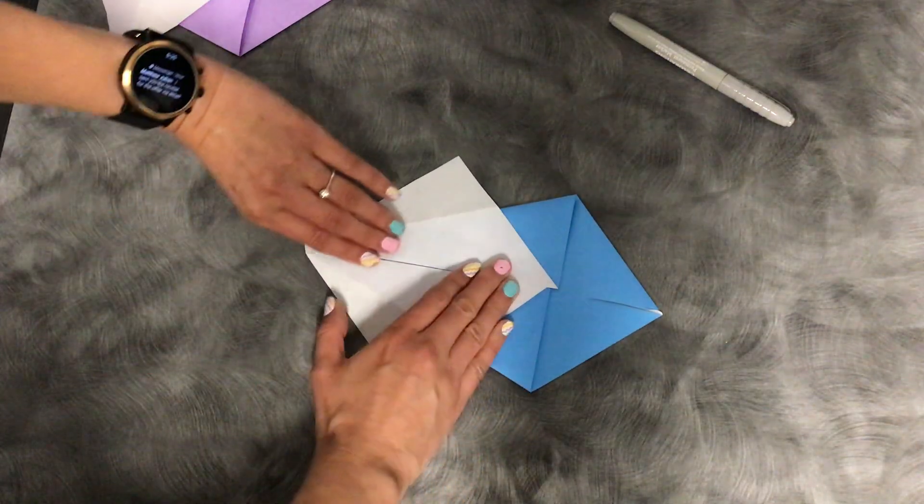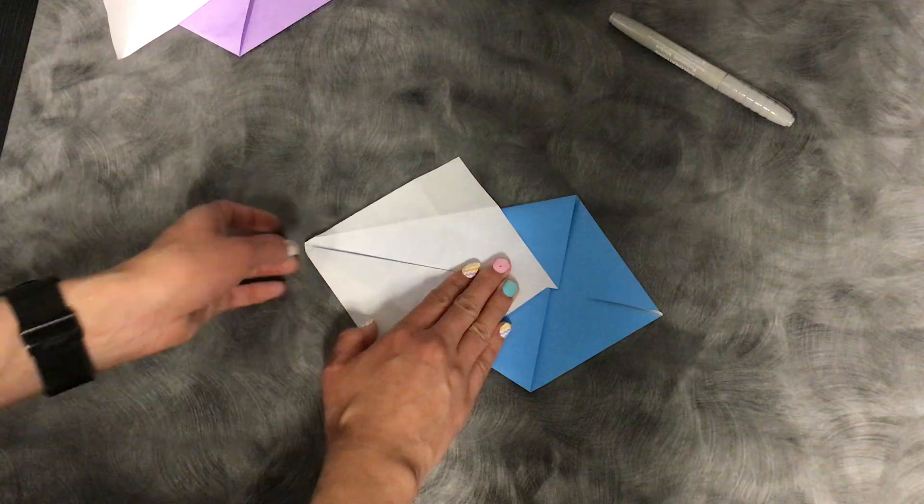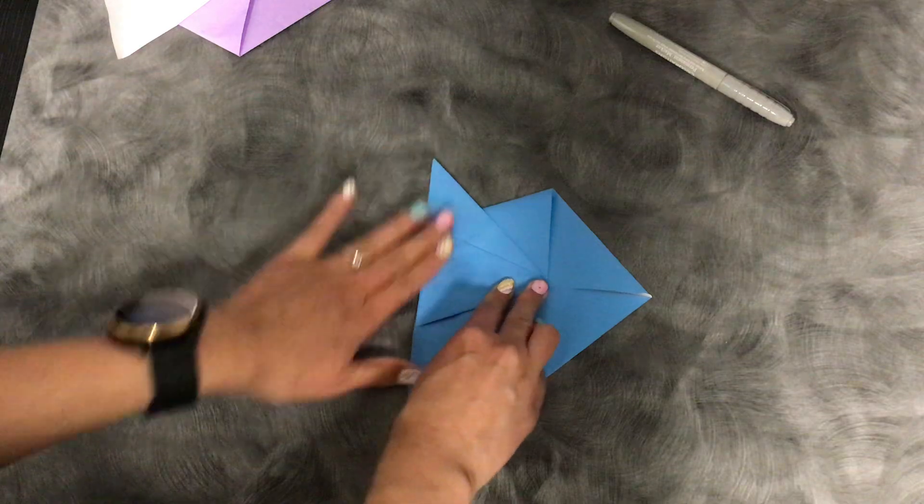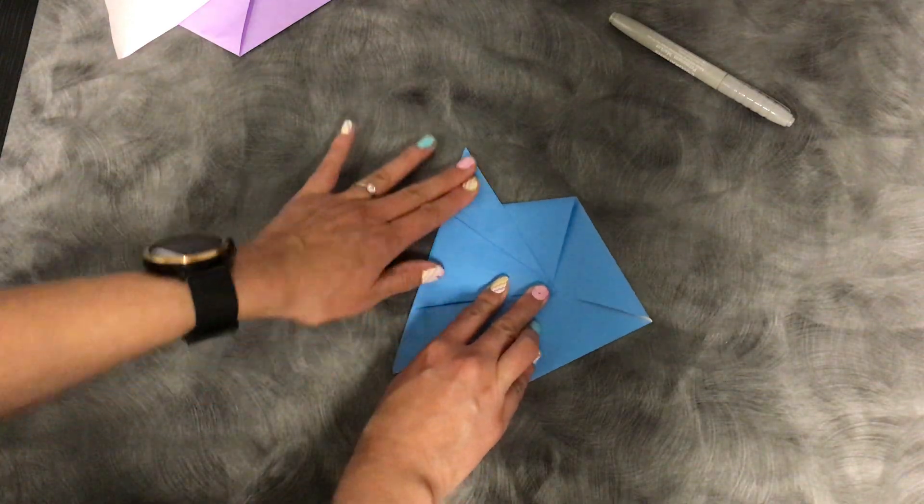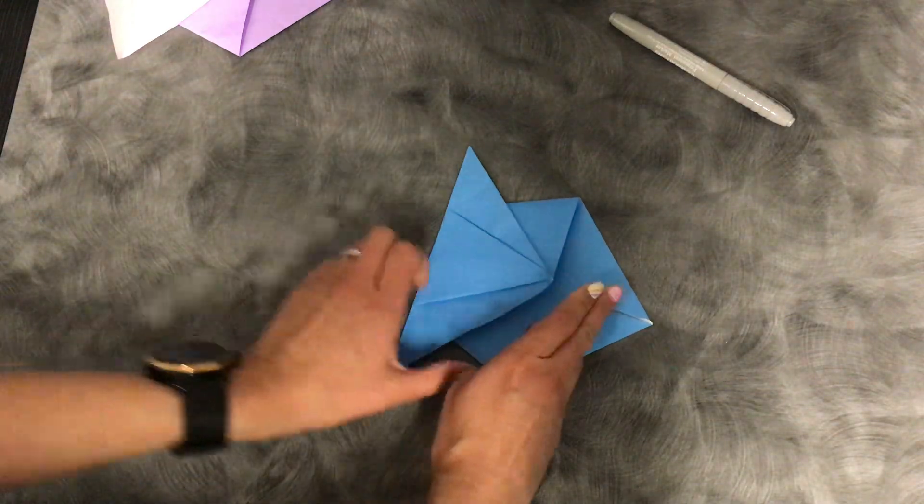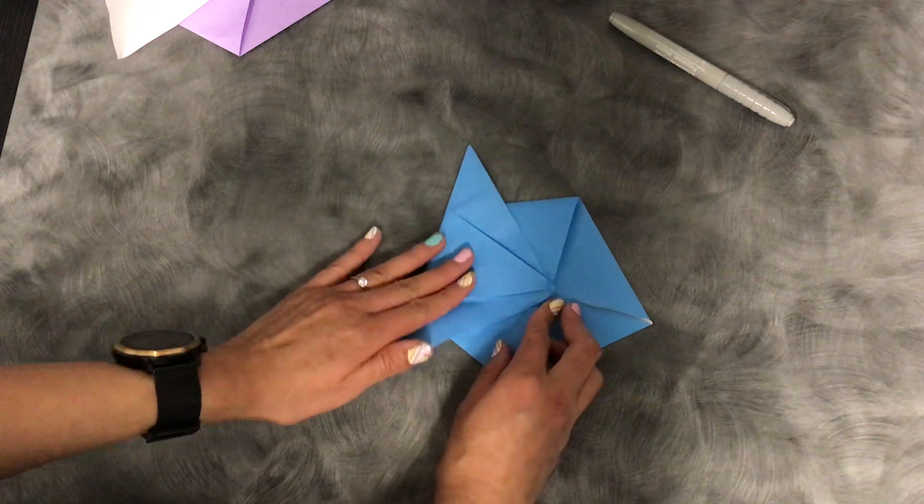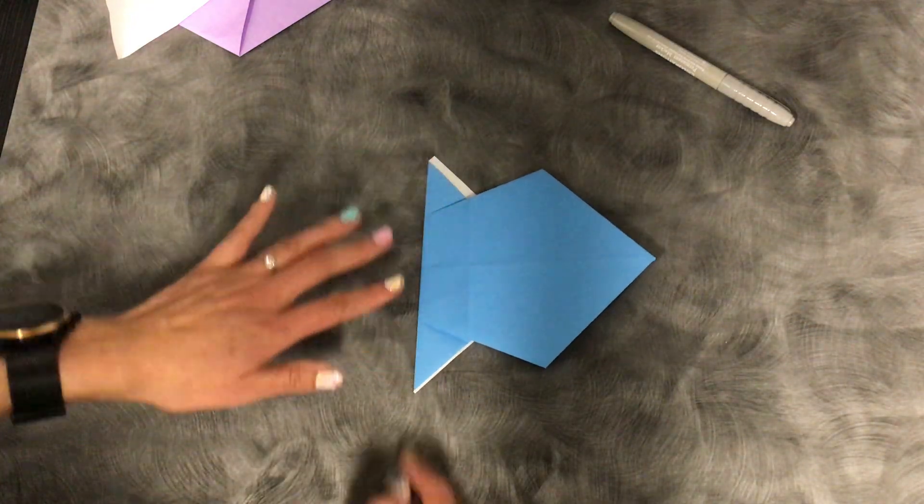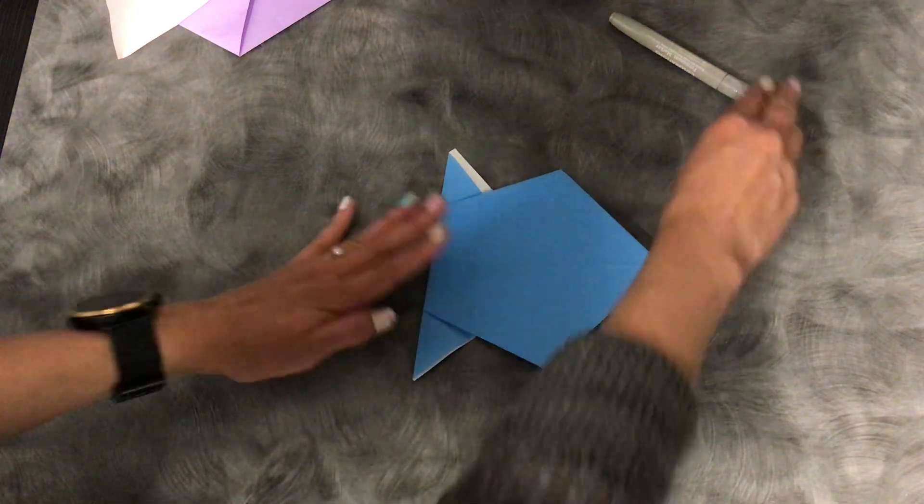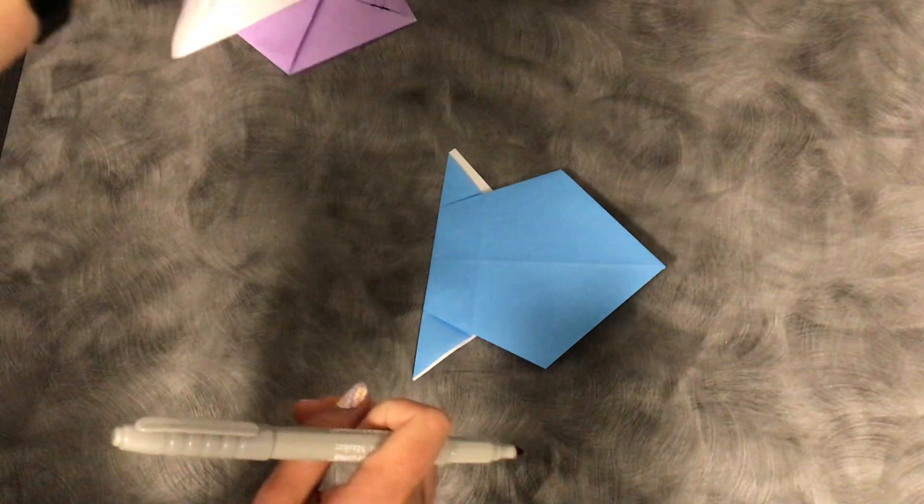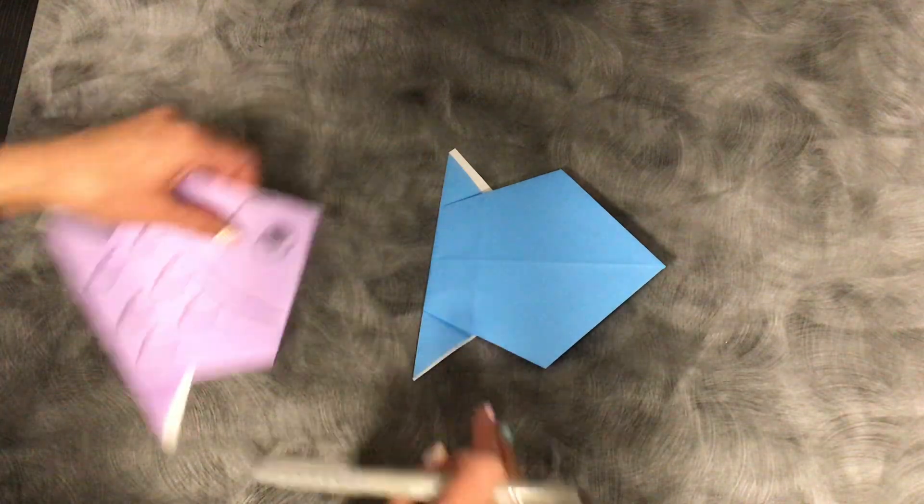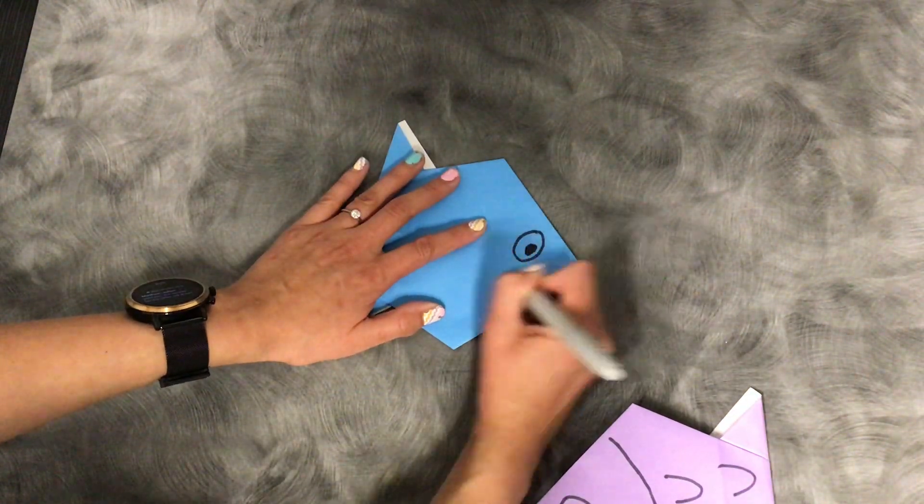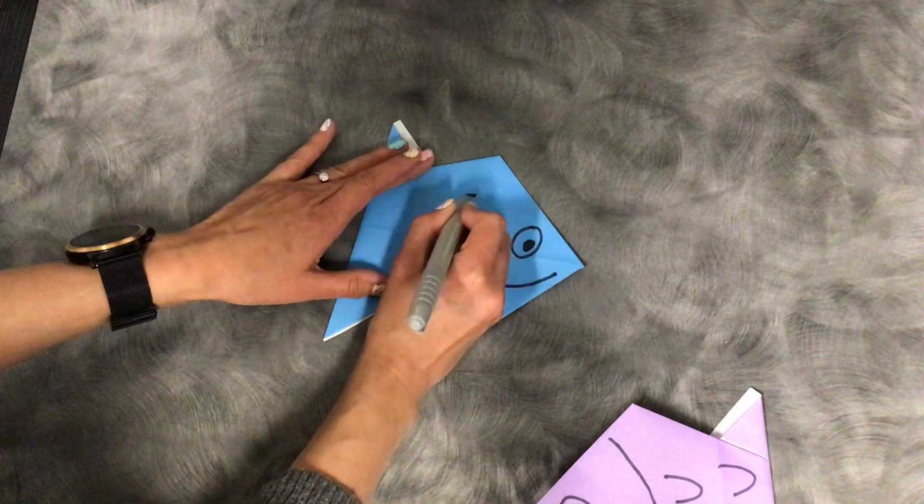And then last you're going to take the edge over here and fold it inward. So it looks a little funny on this side but I promise when you flip it over it'll be perfectly fine. So you take that flap, fold it in and down and you have a fish. So you should have two little edges here for the fins. I have a marker so that I can draw a face on it. So I'm going to put my eye and a smile and then some scales.